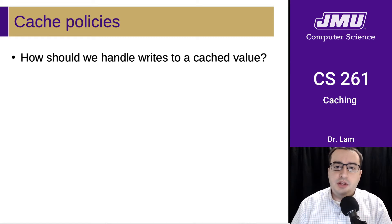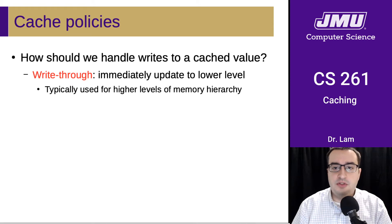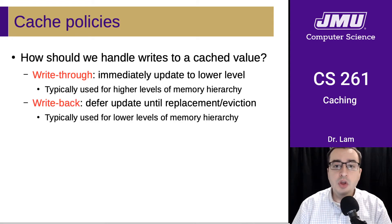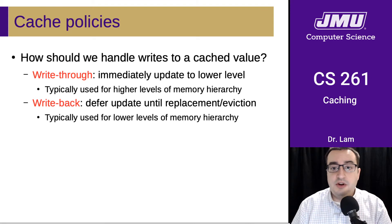We also need to think about how to handle writes. There are two main policies. There's write-through, where if you have a write to something that's in cache, you immediately update the lower level — this is typically used for the higher levels of the hierarchy. Or you could do write-back, where you defer that write until the line is evicted from the cache, which is typically used for lower levels of the memory hierarchy.